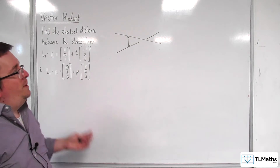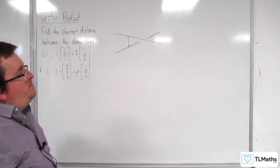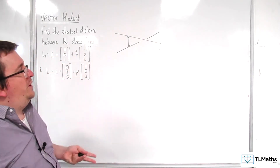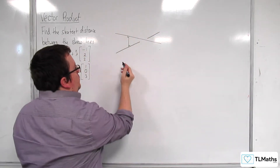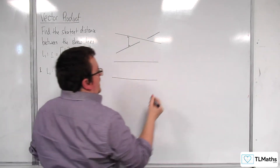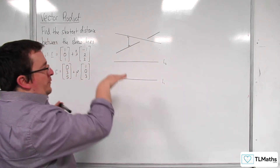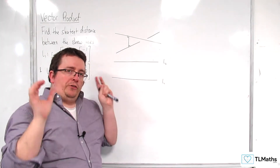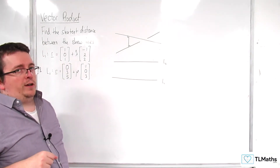This is probably not the best way to visualise these two skew lines. It would be better if we instead looked at them side on. So here's L1 and L2 — you could have L2 pointing in one direction and L1 pointing in another, but because of the perspective, it looks like two flat planes viewed side on.